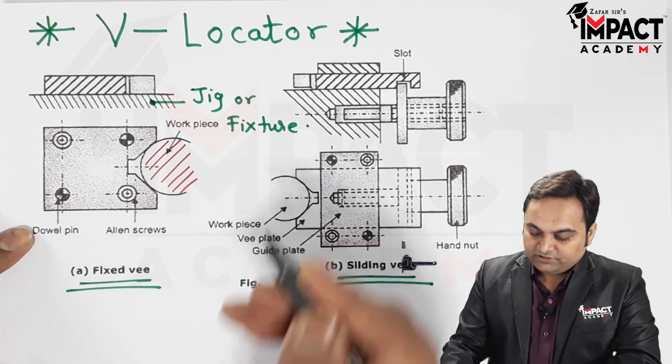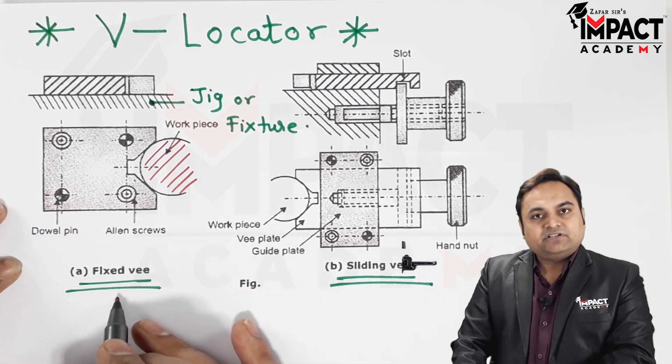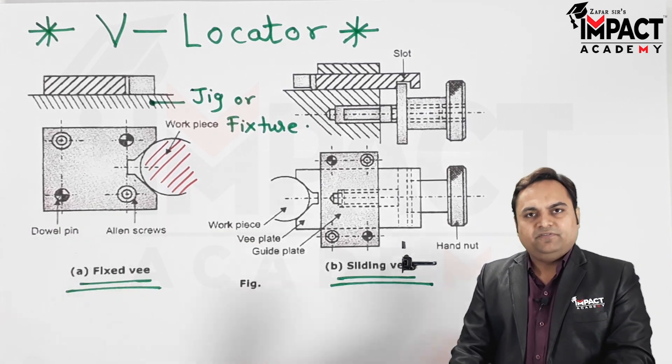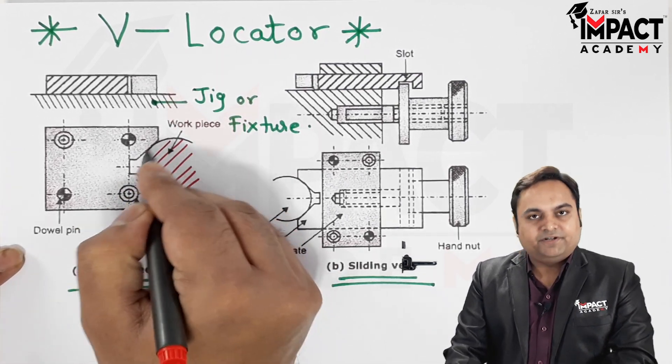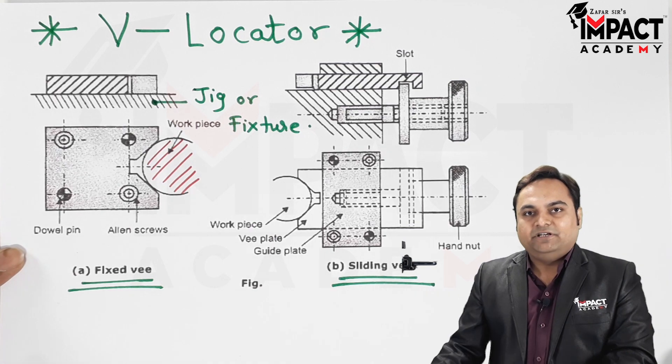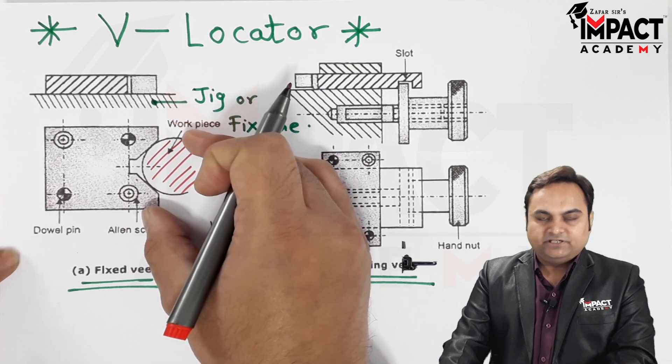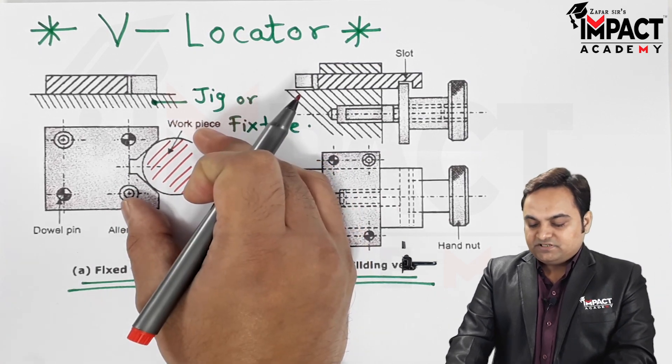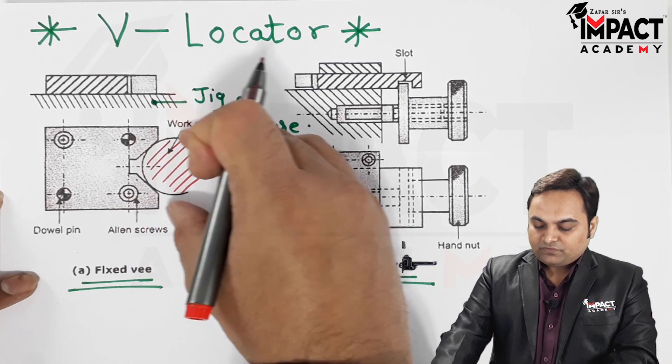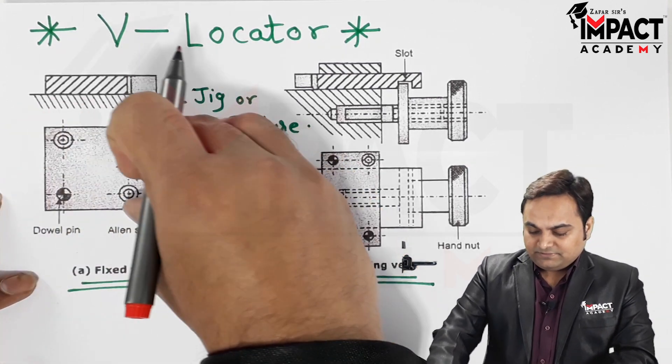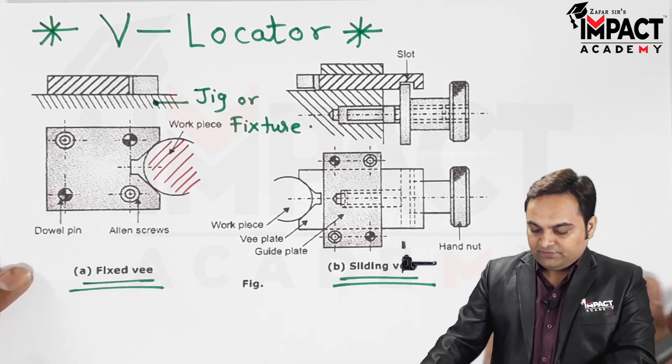Now one of the advantages of the fixed V-locator, or simply we can say V-locator, is that they can accommodate workpieces cylindrical in shape of various diameters. So that is the advantage part of this V-locator. We can have different diameters of workpieces which are cylindrical in shape that can be fixed inside this fixed V-locator, and sometimes it may also act as a clamp in order to hold the workpiece.